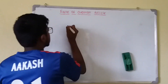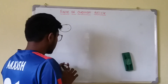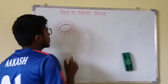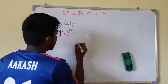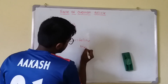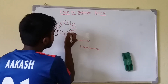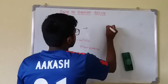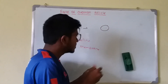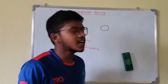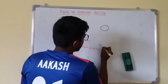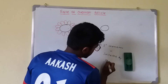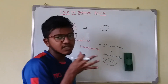The oocyte has a plasma membrane known as the vitelline membrane. The vitelline membrane is called the primary membrane because primary membranes are secreted by the ovum itself. Outside the vitelline membrane, another glycoproteinous covering begins to form between it and the follicular cells.